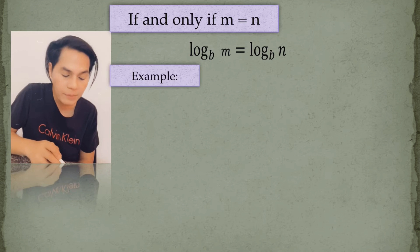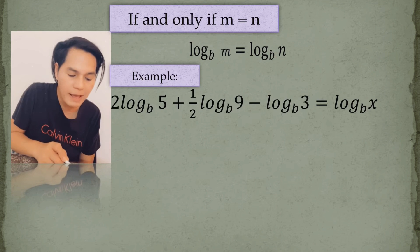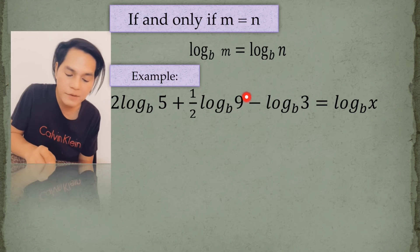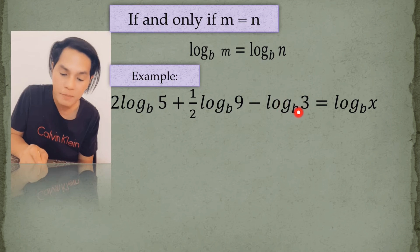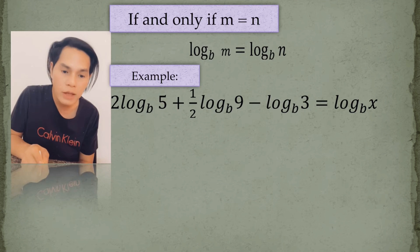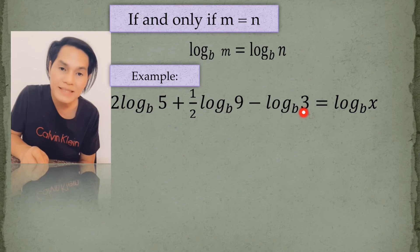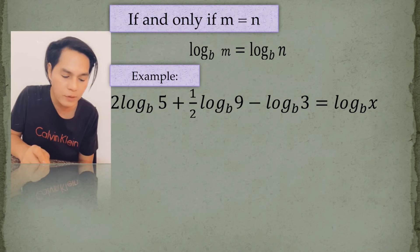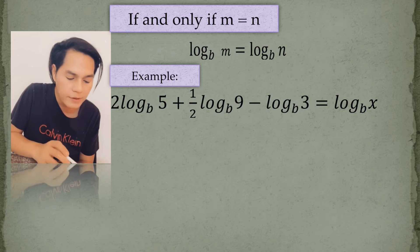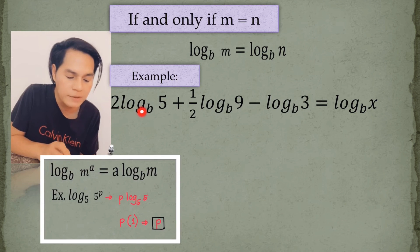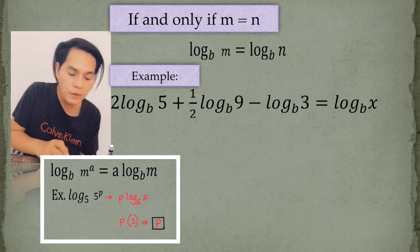Here is an example for this property: 2 times the log of 5 to the base b, plus one-half times the log of 9 to the base b, minus the log of 3 to the base b, equals the log of x to the base b. We are going to simplify the left side into a single logarithm. We start by rewriting 2 times the log of 5 to the base b as the log of 5 squared to the base b, because the coefficient 2 becomes the power of 5.